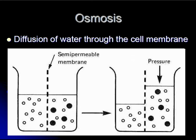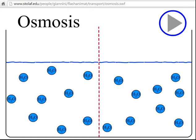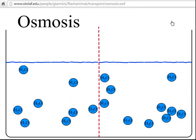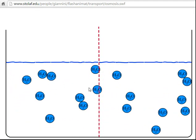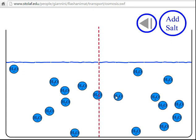Next, we'll take a look at an animation to help us better understand the process of osmosis through a semi-permeable membrane. Here we're looking at a flash animation from St. Olaf College in Northfield, Minnesota. If we take a look at the process of osmosis, we can see that we have a semi-permeable membrane, and on either side the container is filled with water. Now let's watch and see what happens if we set this into motion. We can see that the water molecules are able to move through the semi-permeable membrane, passing back and forth to either side.